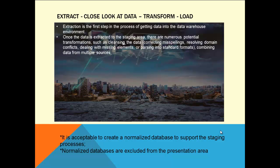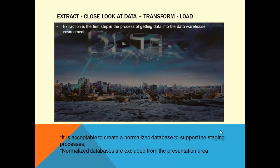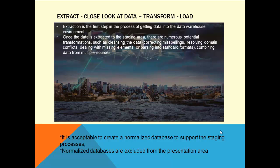Extraction is the first step in the process of getting data into the data warehouse environment. You don't have any control over the source system, so extraction comes first. Once data is extracted into the staging area, there are numerous potential transformations such as cleansing, combining data from multiple sources, correcting misspellings, resolving domain conflicts, dealing with missing elements, and parsing into a standard format — all done in the staging area.